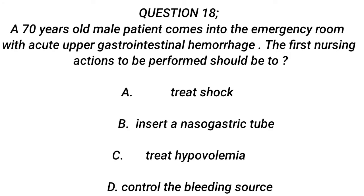Question 18. A 70-year-old male patient comes into the emergency room with acute upper gastrointestinal hemorrhage. The first nursing actions to be performed should be: A. Treat shock. B. Insert a nasogastric tube. C. Treat hypovolemia. D. Control the bleeding source.